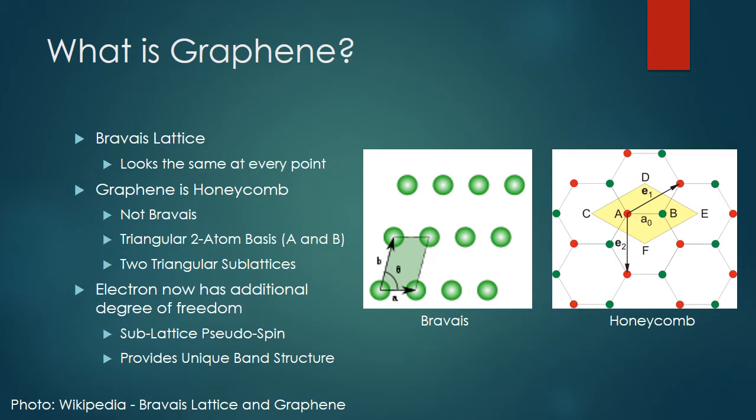Graphene, however, has a honeycomb lattice, and this is not Bravais. A honeycomb lattice has a two-atom basis, typically denoted atoms A and atom B. The honeycomb can instead be viewed as two triangular Bravais sublattices. This is what gives graphene many of its unique properties. With there now being two unique sublattices, electrons now have an additional degree of freedom corresponding to which sublattice they belong to, what is referred to as a sublattice pseudospin. This unique crystal structure, in turn, provides graphene with a very unique energy band structure.